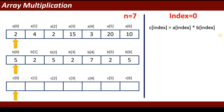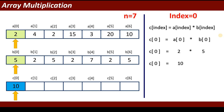To multiply the elements, the statement used is: c[index] = a[index] * b[index]. When index is 0, the statement becomes c[0] = a[0] * b[0]. The value of a[0] is 2 and b[0] is 5, so 5 multiplied by 2 gives 10, and 10 is stored in location c[0].